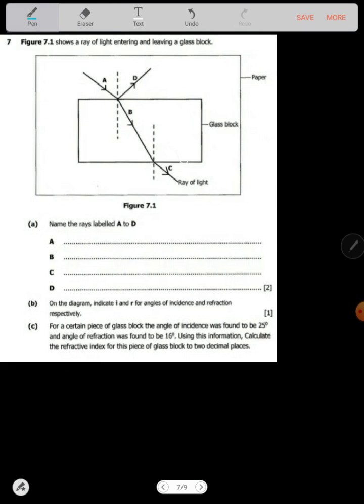We have this question that says the figure below shows a ray of light entering and leaving a glass block. So I have a paper, a ray of light. Name the rays A to D. What is ray A? Ray A is just the incident ray.